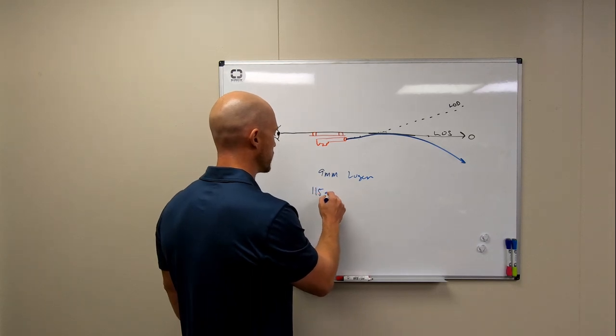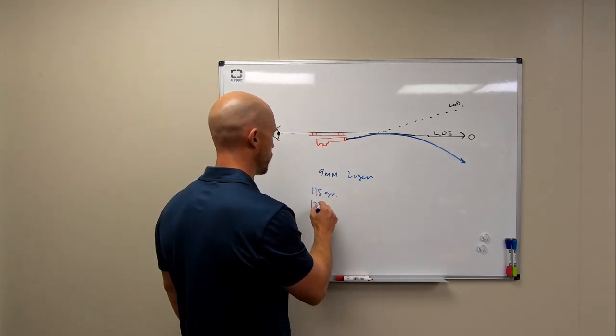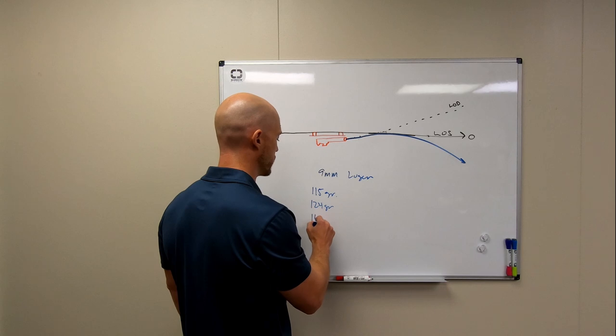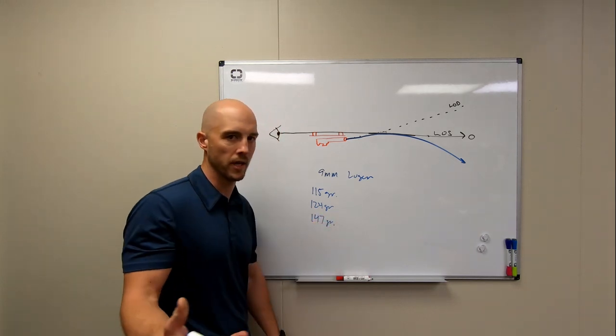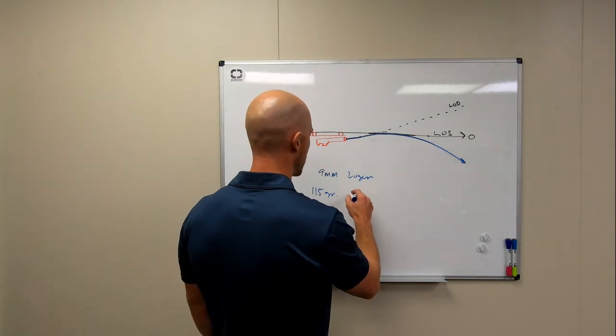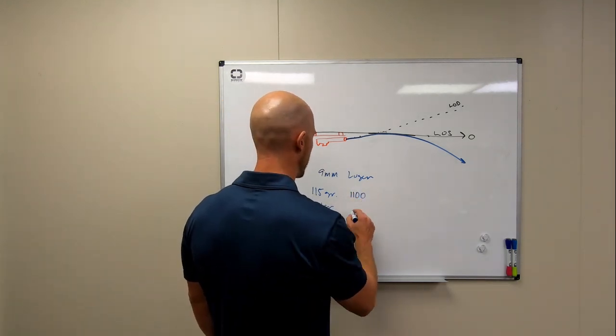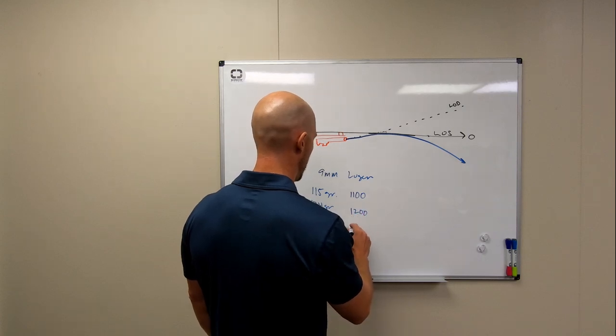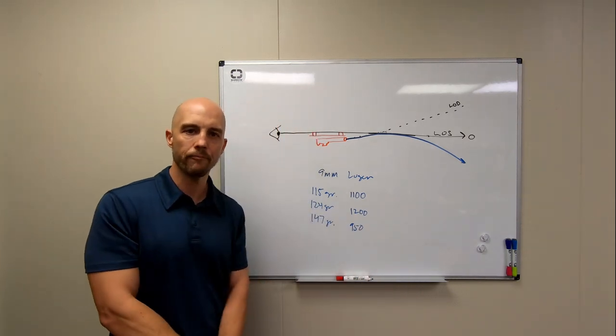So in the case of the nine millimeter, let's actually look at the nine millimeter for a moment. Nine millimeter Luger cartridge. One of the more common bullet weights: 115 grain, 124 grain, and 147. There are certainly others, but we'll just look at those for a minute. So then we have their velocities and we'll call this 1100 feet per second. That's probably 1200 feet per second. And maybe this is 950 to a thousand, somewhere in there.